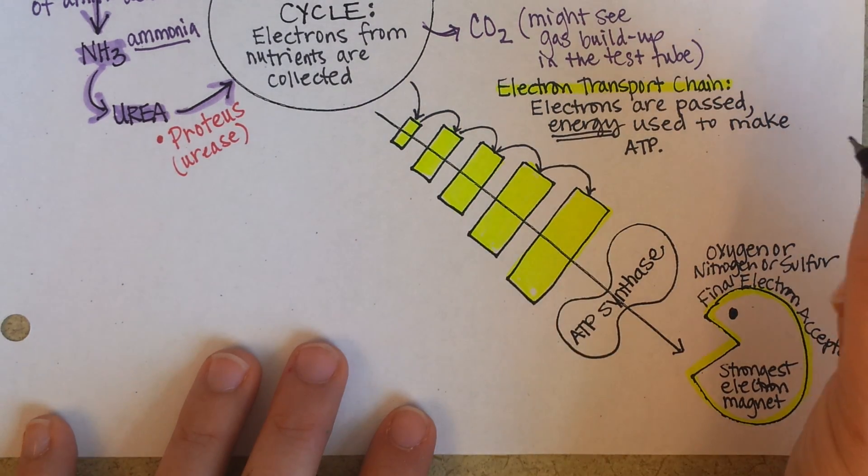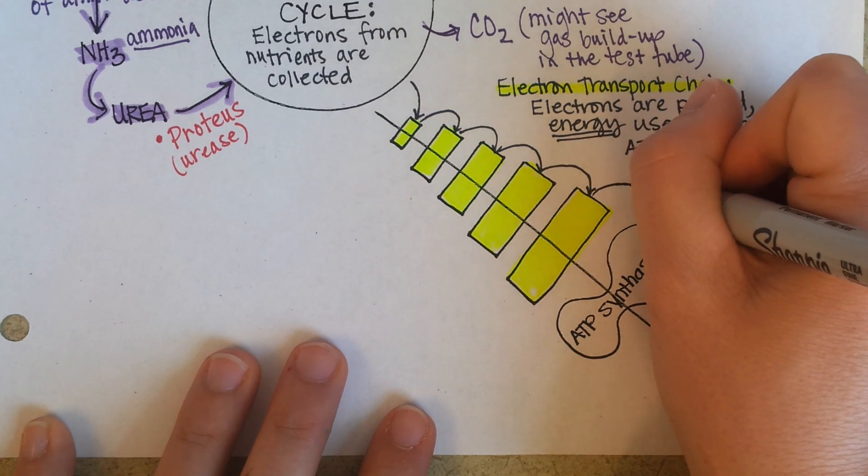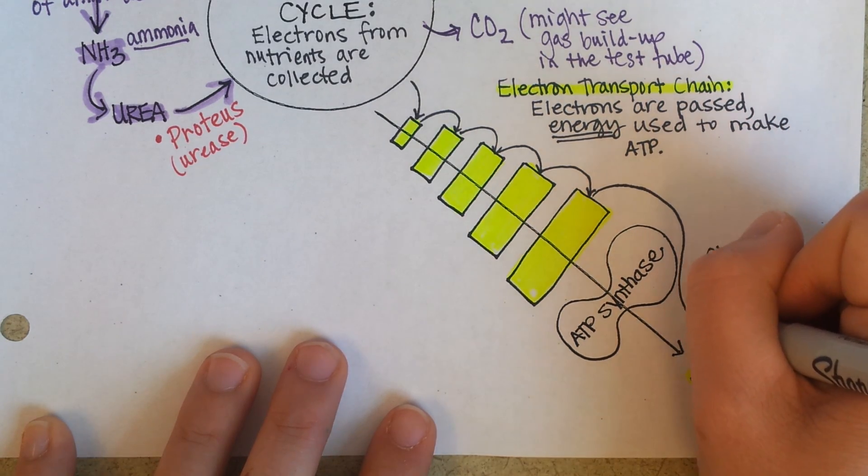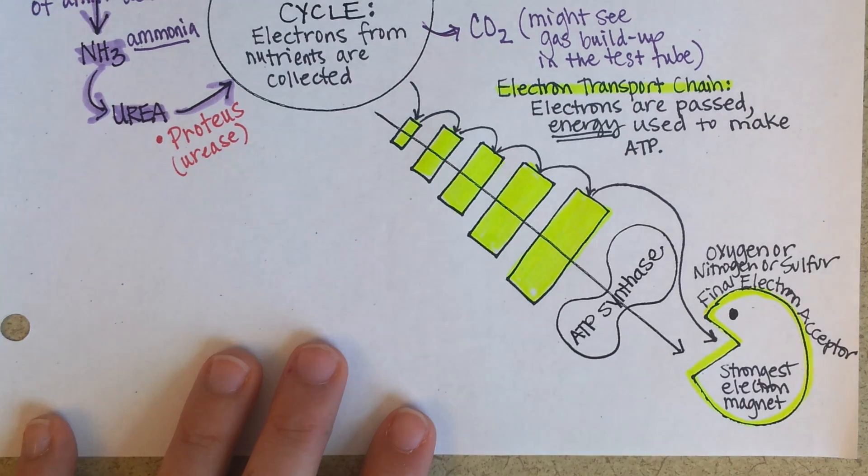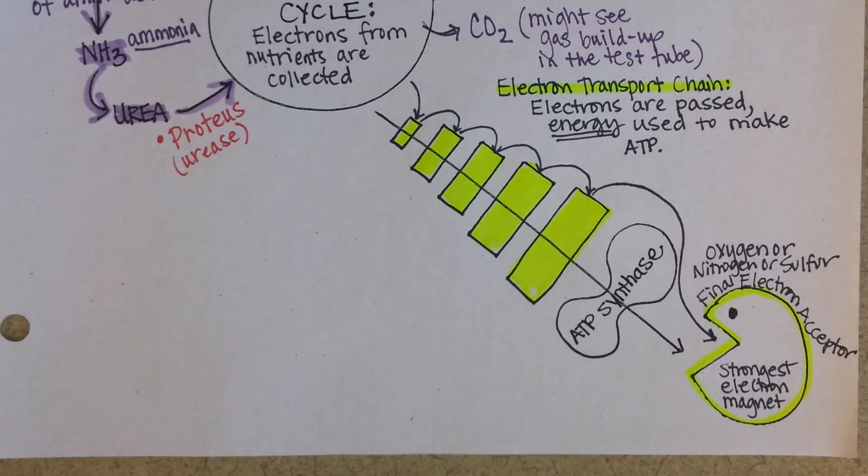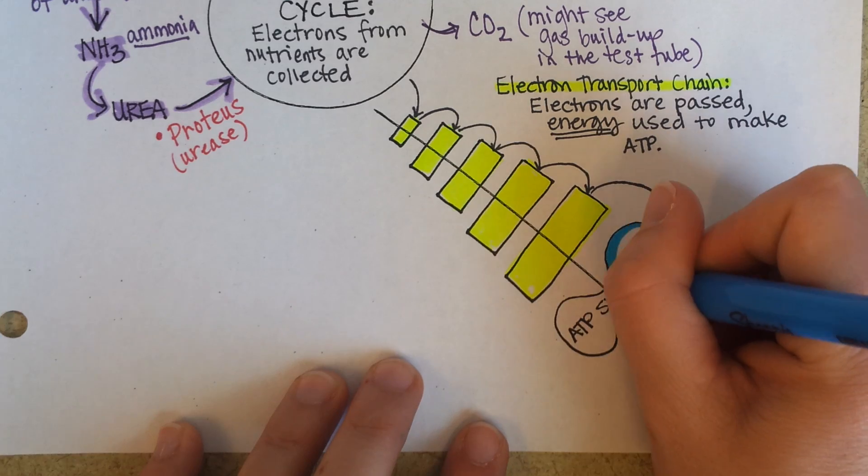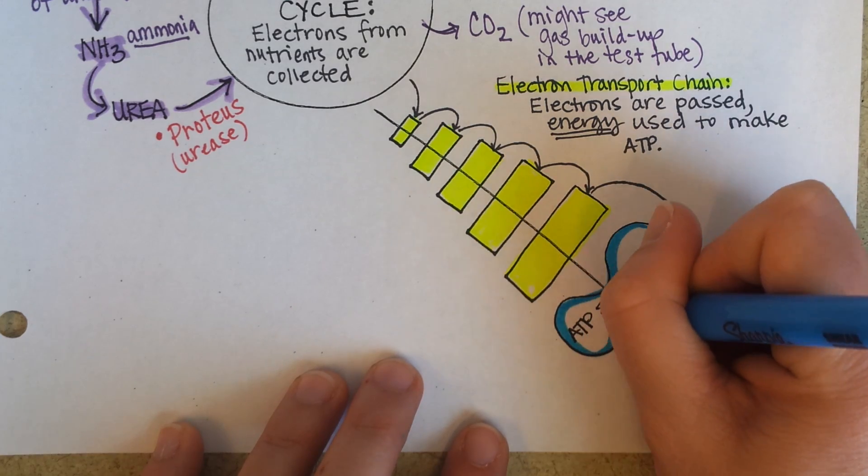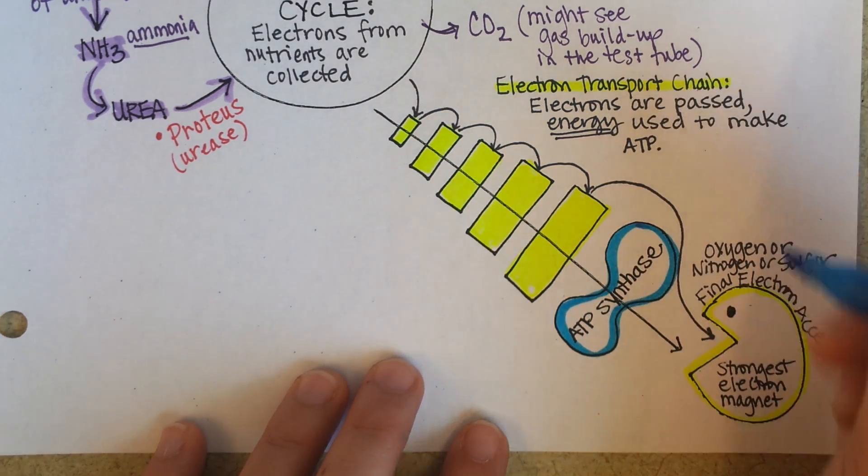And what happens then is as they're pulled to the final electron acceptor, the movement, just like a hydroelectric dam, provides the energy to power up this machine called ATP synthase.